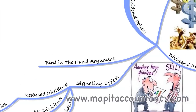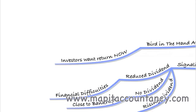The bird-in-the-hand argument states that investors want their return now. They'd rather receive the dividend than have the business reinvest earnings and try to increase the share price, because if the reinvestment isn't done wisely, investors may never get a return. So they take the dividend now to avoid that risk.